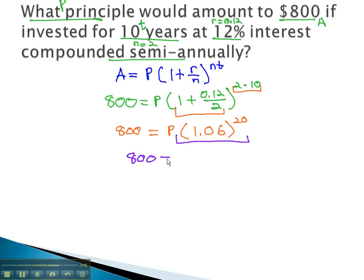This gives me 800 equals 3.2071355 times P. Again, with exponential functions, it's important to use several decimals to ensure accuracy.